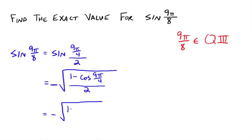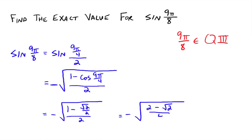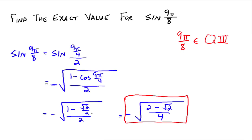So we have negative the square root of 1 minus cosine of 9π over 4, all over 2. Cosine of 9π over 4 is √2 over 2, all over 2. Multiplying top and bottom by 2 gives us negative the square root of 2 minus √2, all over 4. That's the exact value for the sine of 9π over 8 — it looks a bit ugly, but that's the exact value.